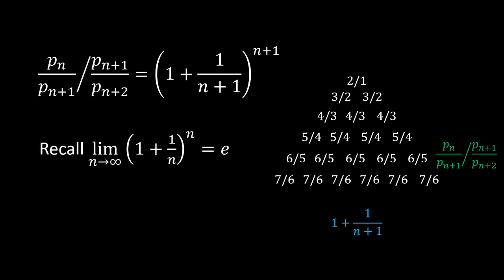And now we recall the famous formula for e, namely limit of 1 plus 1 over n to the power of n is equal to e. So indeed, the limit of the ratio of ratios is equal to e.